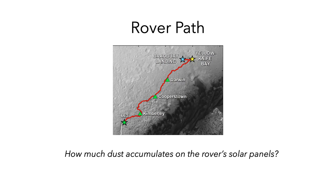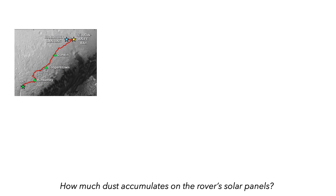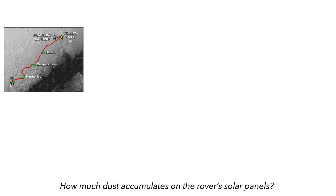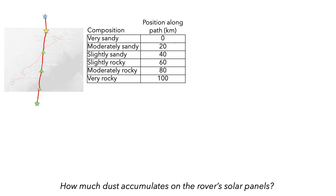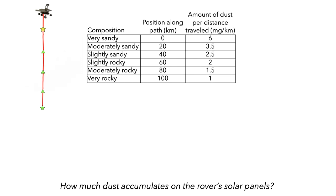The first step is to identify the composition of the Martian surface at various points along the route. Here is a table that shows the composition at 6 points along the rover's proposed route. Here is NASA's estimate of how much dust would accumulate on the solar cells per kilometer traveled for each type of surface composition.